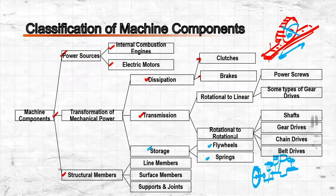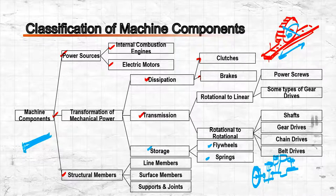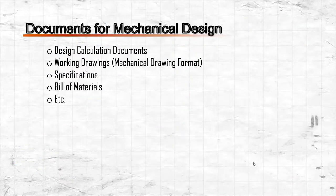For structural members, we have line members such as actual members, beams, columns, and braces — where the length is much larger than the cross-section. Surface members such as walls or plates have area much larger than thickness. Supports and joints include hinges, bearings, and similar components.